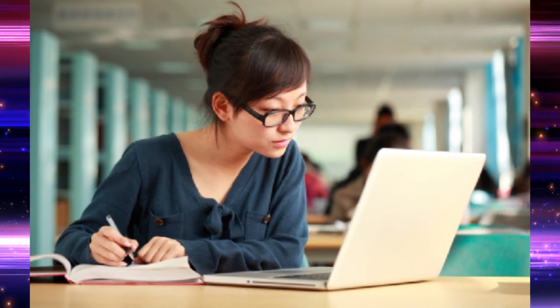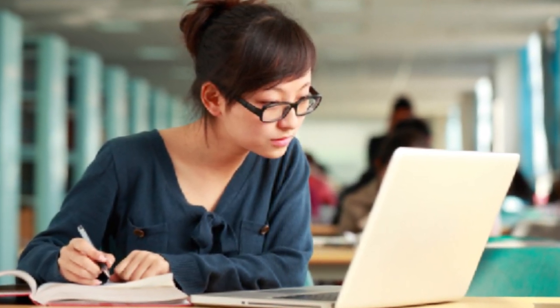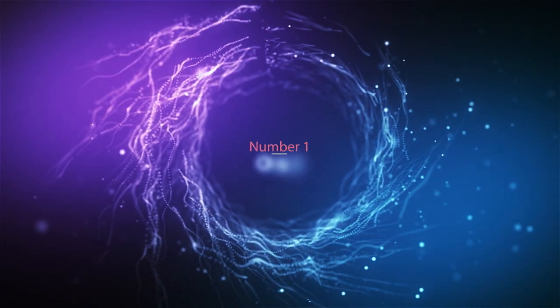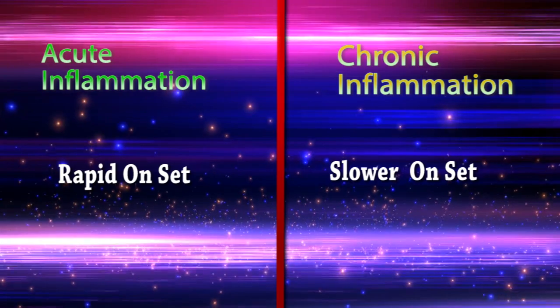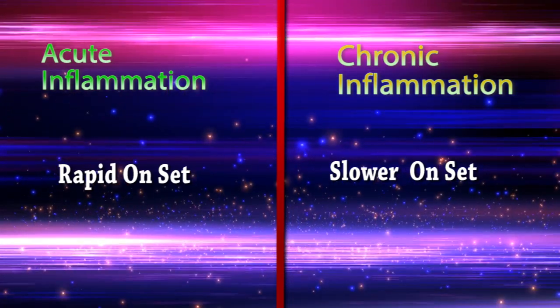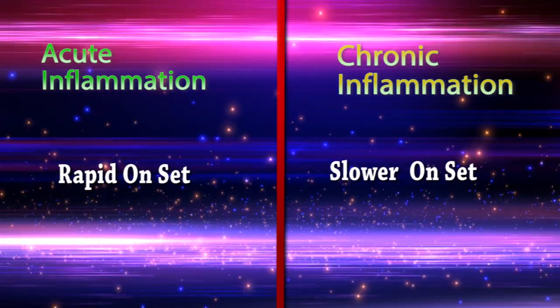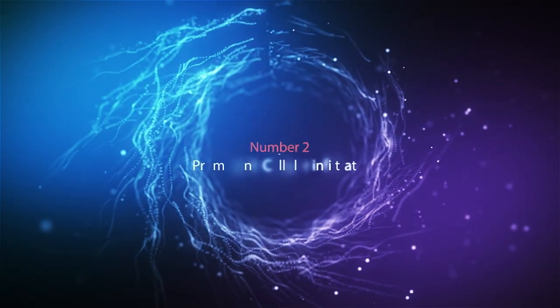Now we are going to study the differences between acute and chronic inflammation. Difference number one: onset. We can see rapid onset in acute inflammation, but chronic inflammation shows slower onset.